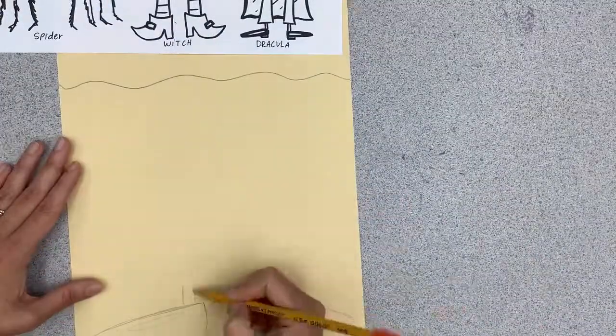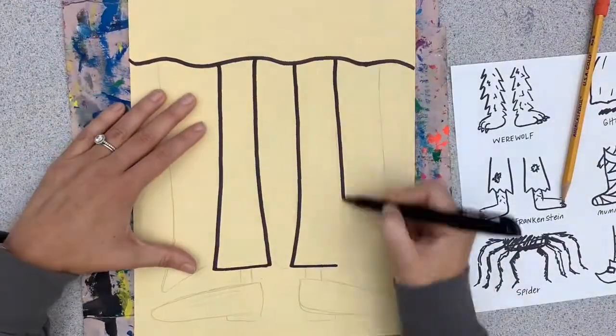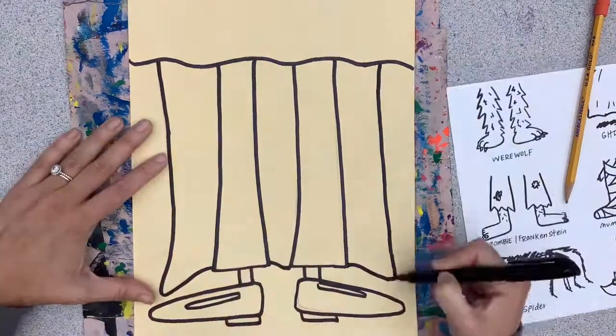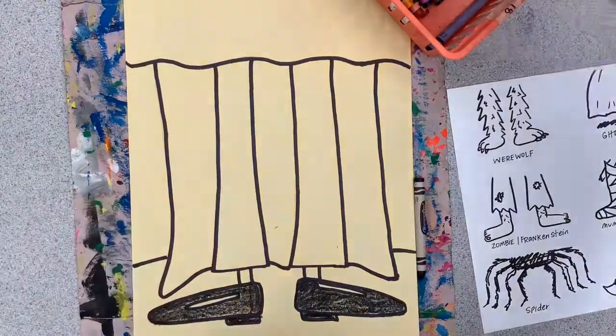You're going to draw the bottom part of your bed, the legs of your monster, any type you wish. Use your Sharpie to go over your pencil lines. Use your eraser to erase any extra pencil lines.